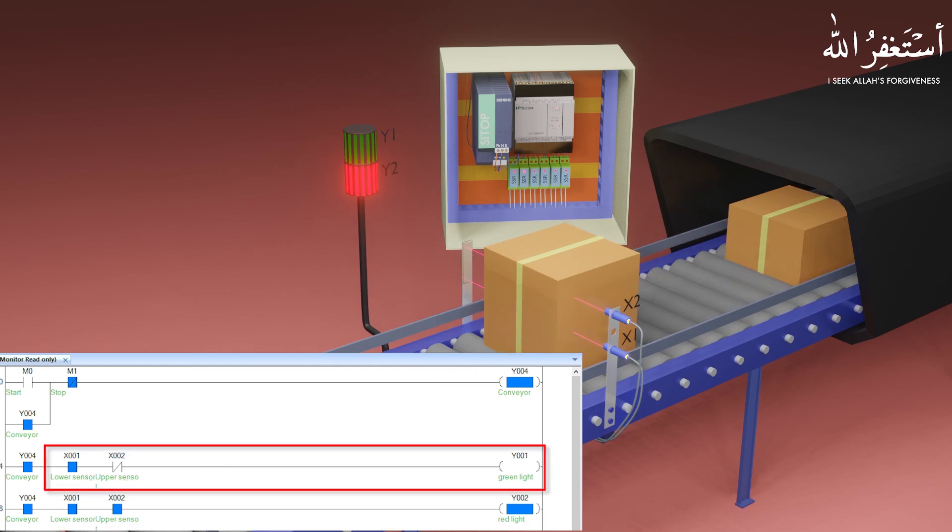If you see the second rung, the X1 sensor normal open contact is closed. But as we have used the normal closed contact of the X2 sensor, the X2 sensor is right now on. That's why its normal closed contact is open, and the green light which indicates the small box is off.